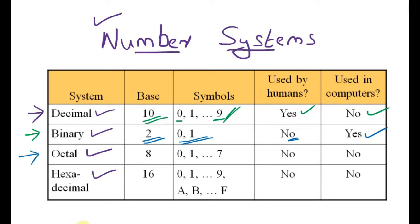There are two other number systems as well. The first one is the octal number system. The octal number system has 8 symbols, that is from 0 to 7: 0, 1, 2, 3, 4, 5, 6, 7. Since there are 8 symbols, the base is 8.